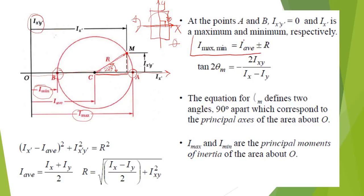Our I_max or I_min is determined by I average plus or minus R. The equation tan 2θ equals this derived expression. The equation for θ defines two angles 90 degrees apart, which correspond to the principal axes of the area about point O.